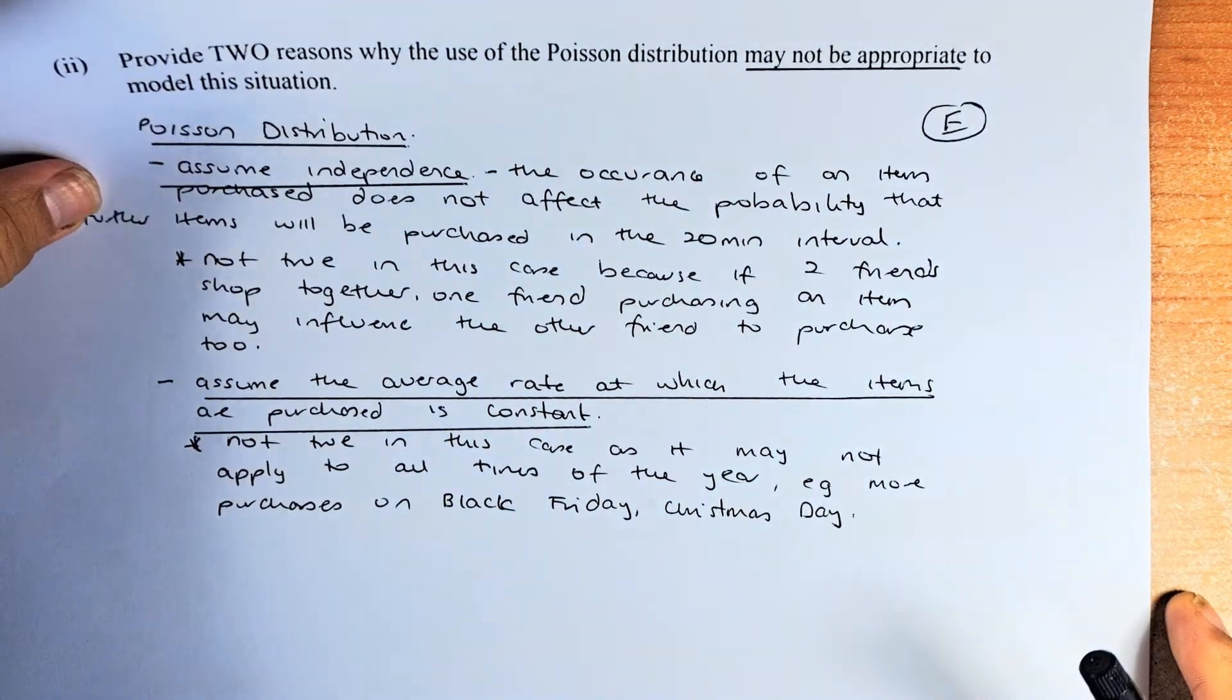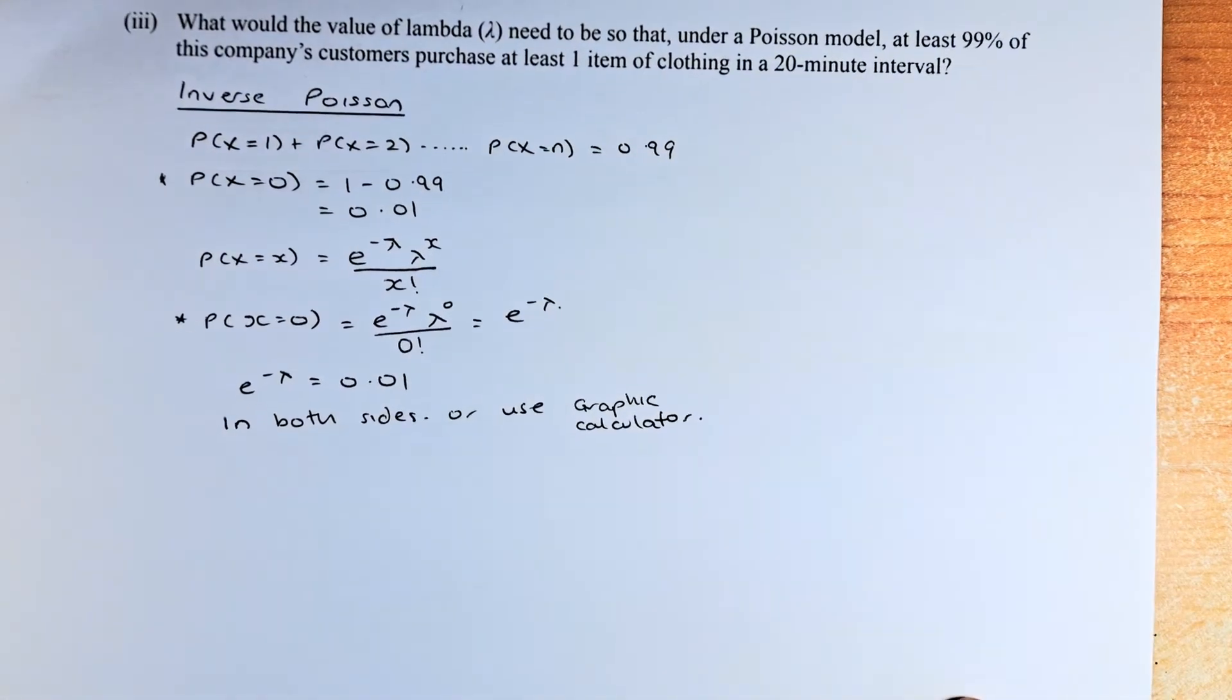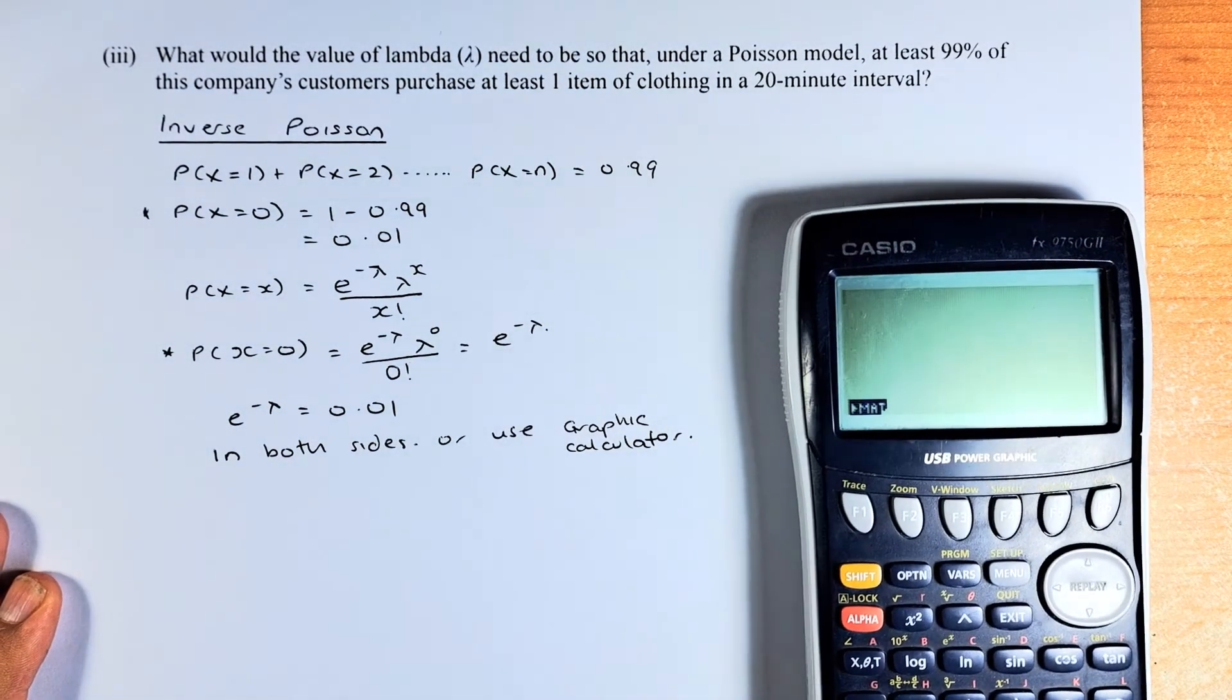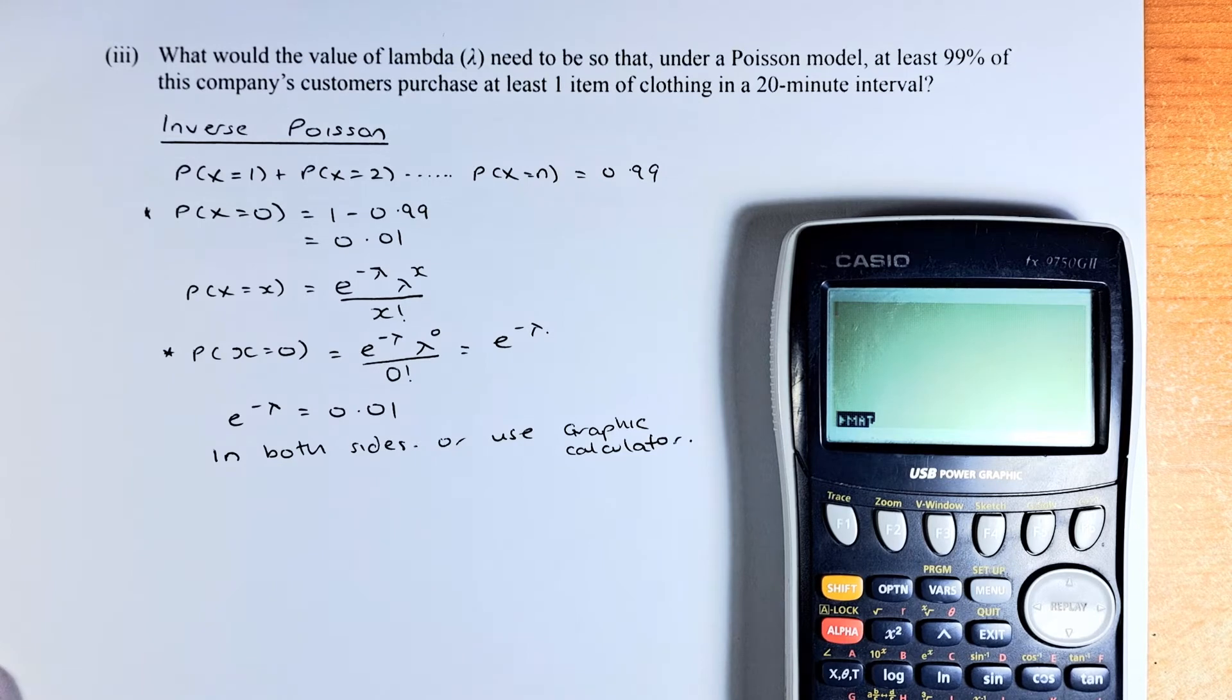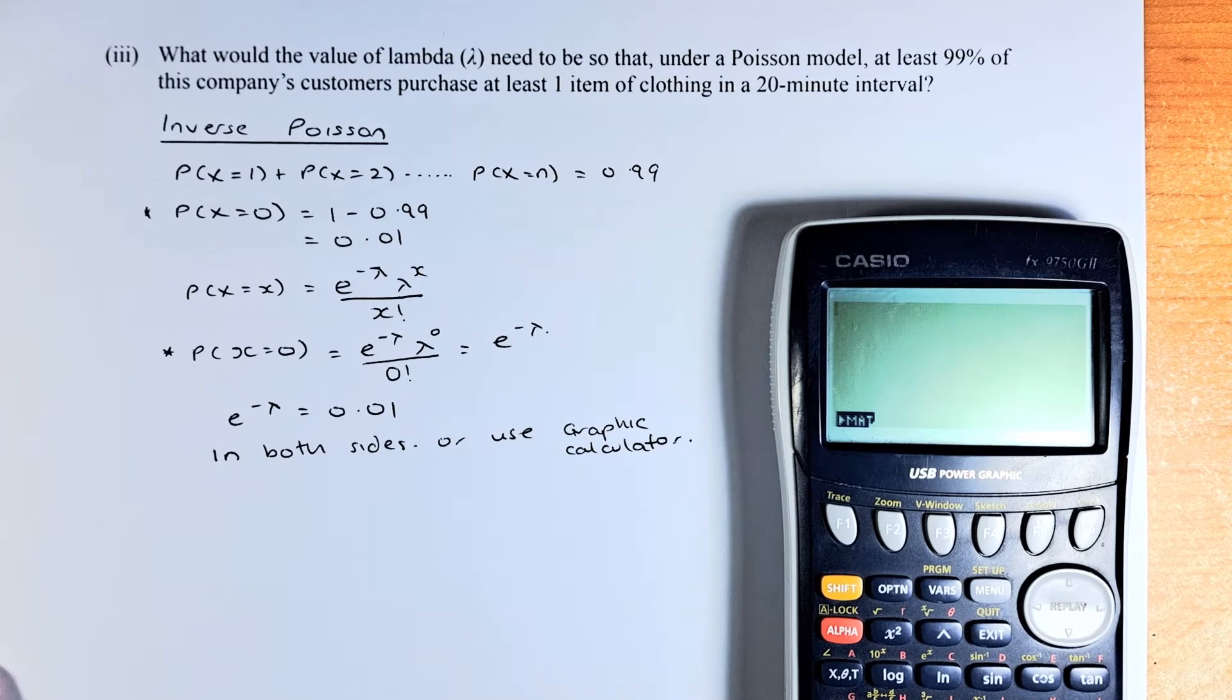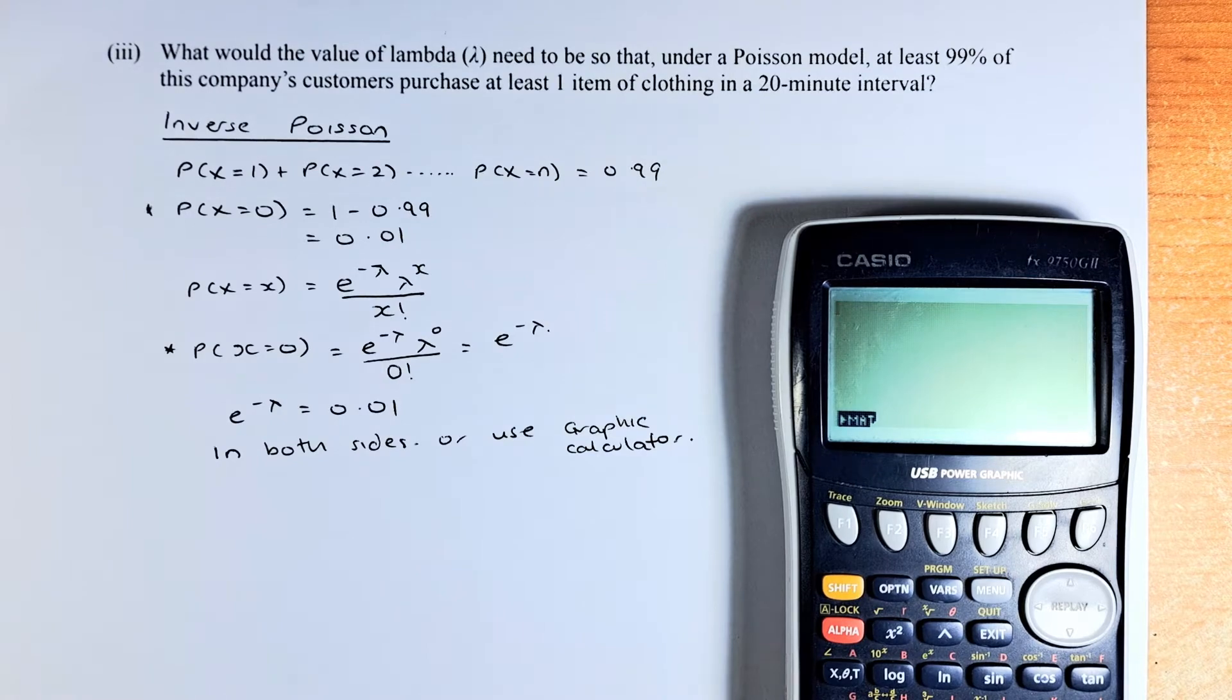So we will do question part 3 and we need to do a bit of calculation for part 3. We shall read the question and I will bring back the calculator in play now. What would be the value of lambda or the mean need to be so that under a Poisson model, at least 99% of this company's customers purchase at least one item of clothing in a 20-minute interval. So this is inverse Poisson.